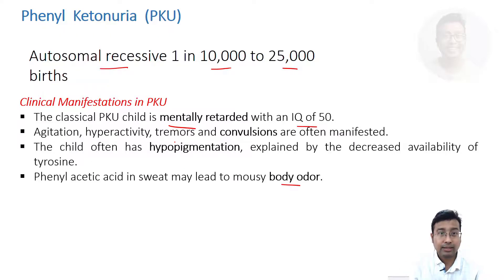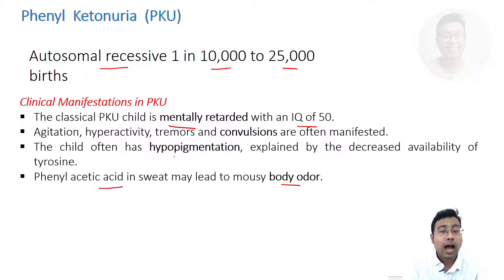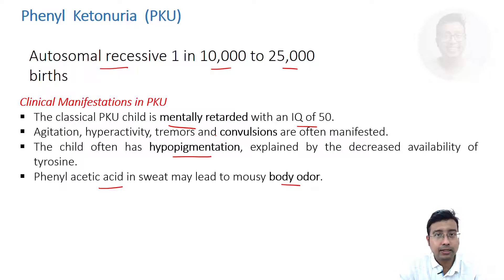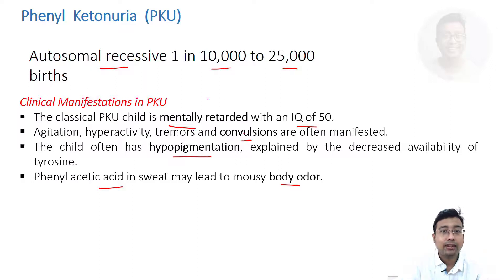It is also accompanied by hypopigmentation and mousy body odour. Mousy body odour is due to accumulation of phenylacetic acid and its trickling in sweat — phenylacetic acid has a characteristic odour. Hypopigmentation is due to defective melanin formation from tyrosine. Tremor, agitation, and convulsion occur because of defective formation of neurotransmitters and catecholamines from tyrosine. Mental retardation is due to defective production of thyroid hormone.